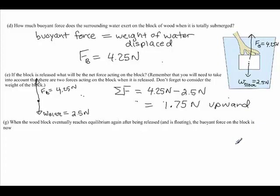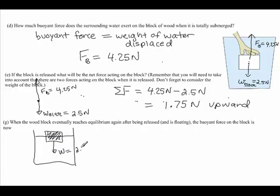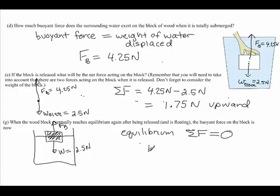When the block eventually reaches equilibrium and is floating, what is the buoyant force on the block? Drawing a picture: the block is floating at the water surface. The weight of the block still acts downward at 2.5 newtons. Since it's floating and in equilibrium, the buoyant force acts upward. The buoyant force is less than before because less of the object is submerged. For equilibrium, the net force must be zero, so the buoyant force must equal the weight of the block: 2.5 newtons.